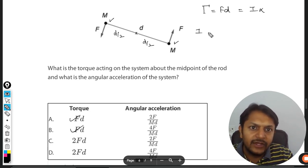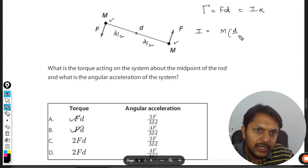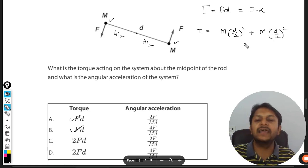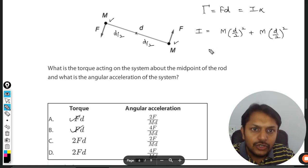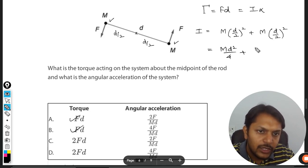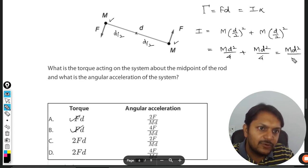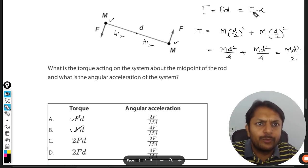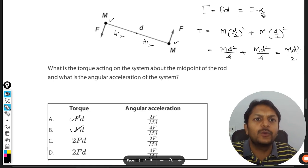For the first body it is M into (d/2) squared plus the moment of inertia for the second one, which is M (d/2) squared. So this is coming out to be M d squared by 4 plus M d squared by 4, which is equal to M d squared divided by 2. So this is the moment of inertia. We are just going to plug this value into this equation, we will find alpha.